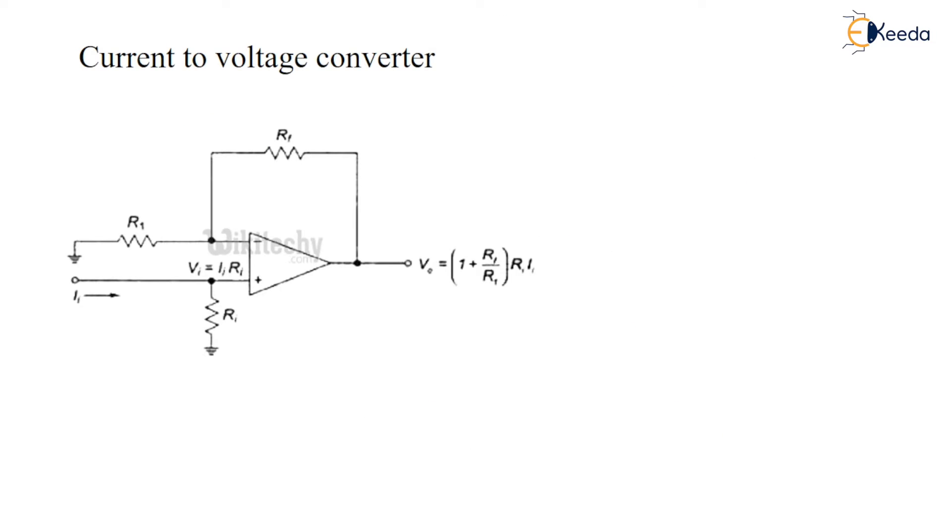The current to voltage converter is also called a trans-resistance amplifier. The input to this circuit is in the form of current and its output is voltage which is proportional to input current.